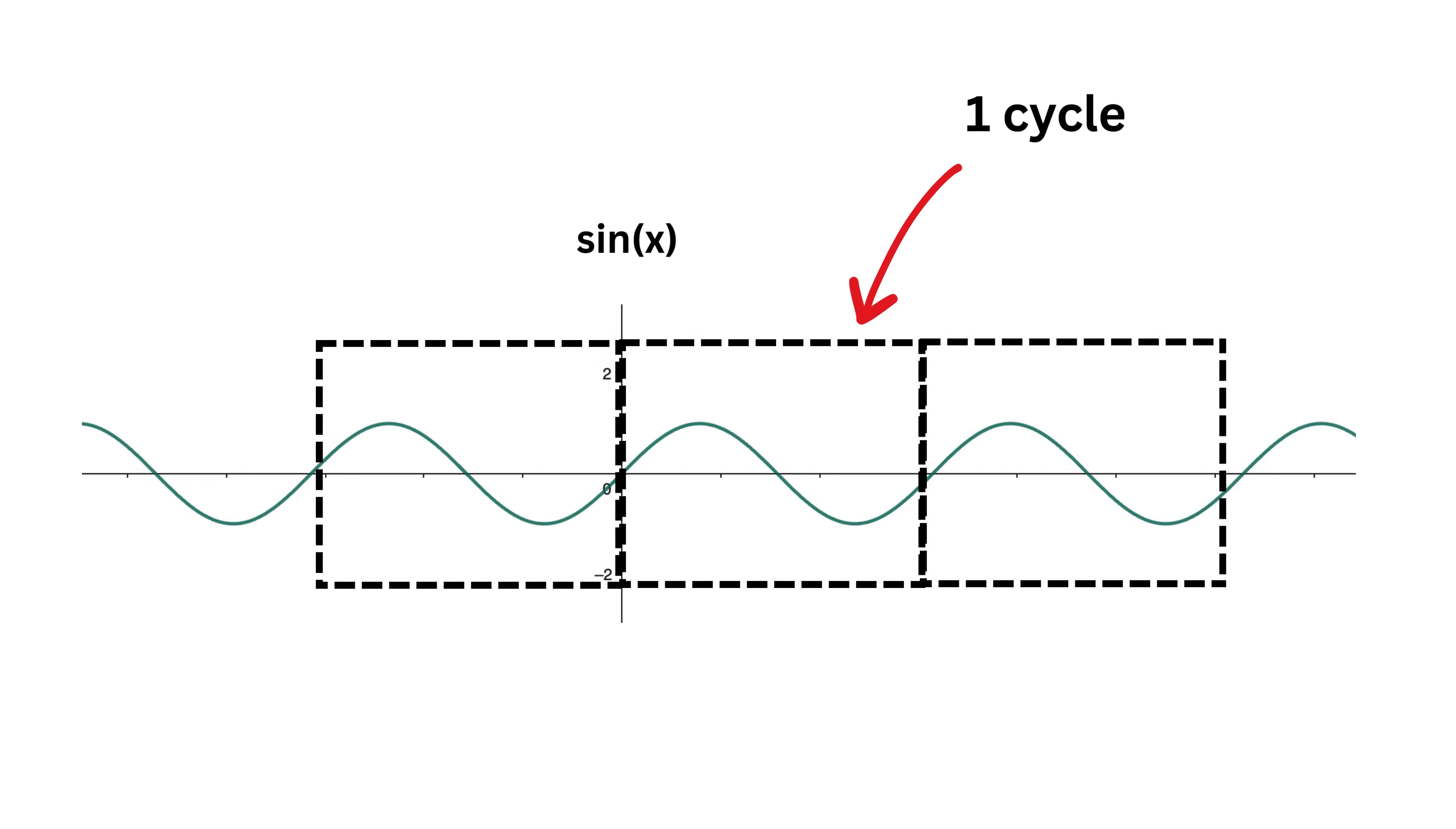It keeps repeating itself again and again in a regular pattern, which means the wave has a certain frequency, which means in one second how many such cycles are repeated. This means that if this is one second, then the frequency of this wave is three cycles per second, and if this is one second, then the frequency of this wave is two cycles per second.